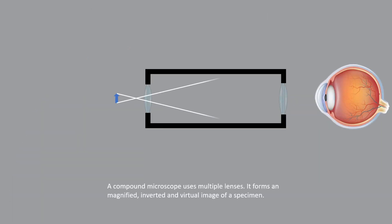A compound microscope uses multiple lenses. It forms a magnified, inverted, and virtual image of a specimen.